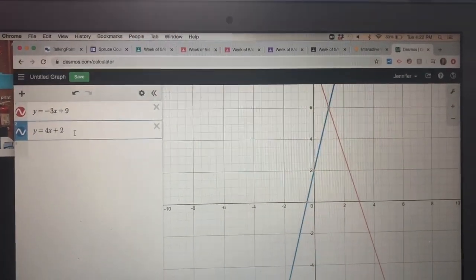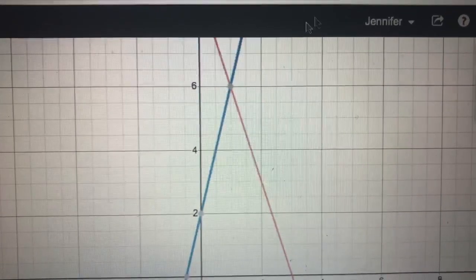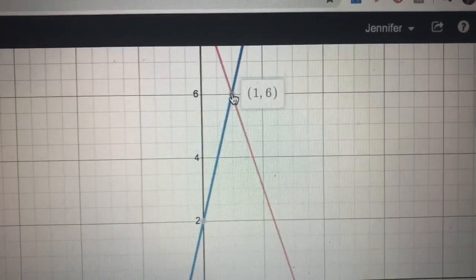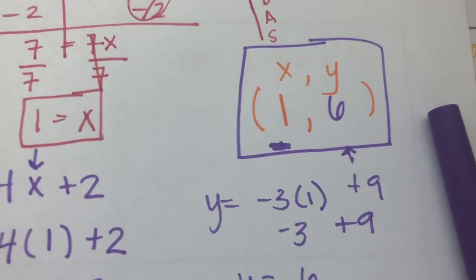So remember the solution to the system is the point where the two lines cross. So I can take my cursor, scroll it over, and what do you know? It's the same as what we solved. This makes both of our equations true and it's also where it crosses.